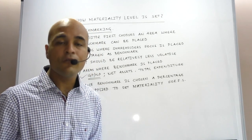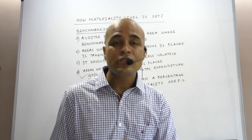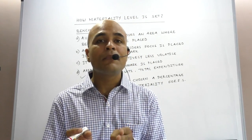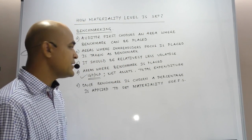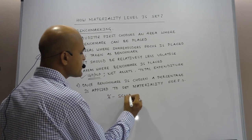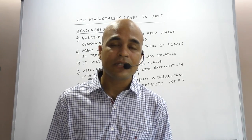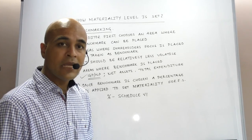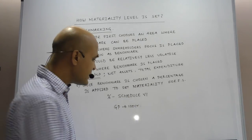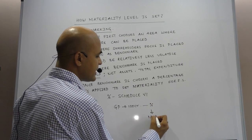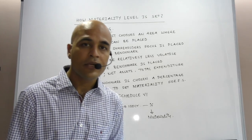You can choose the GP or NP ratio for expenses and income when setting the Materiality level. Once the benchmark is chosen, we apply a percentage to that benchmark to set the Materiality level. The percentage can be taken from Schedule 6, or the auditor can exercise judgment regarding the percentage to apply. For example, if gross profit is 100 crores, apply a percentage to it and you get the materiality level.